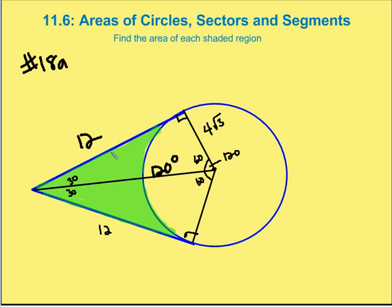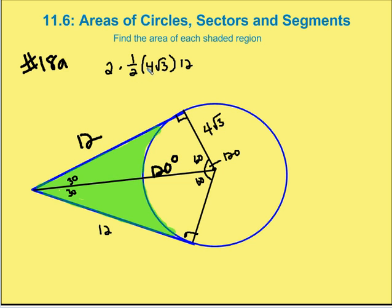Now I can figure out the area of this triangle and then subtract the area of the sector to get the area of the green shaded region. So let's find the area of both triangles combined, then subtract the entire sector area, and we'll be left with the green area. The two triangles: two times one-half base times height, so two times one-half times 4√3 times 12. Two times one-half gives me one, so 4√3 times 12 gives me 48√3. That's the area of the two triangles, including the shaded area.